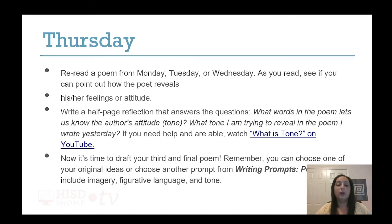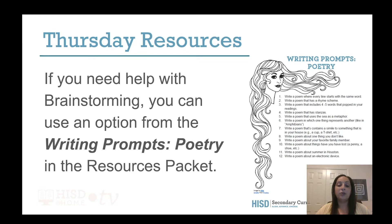On Thursday, you will re-read a poem from Monday, Tuesday, or Wednesday. As you read, see if you can point out how the poet reveals his or her feelings or attitudes. Write a half-page reflection that answers the questions: what words in the poem let us know the author's attitude or tone, and what tone am I trying to reveal in the poem I wrote yesterday? If you need help and are able, watch What is Tone on YouTube. Now it's time to draft your third and final poem. You can choose one of your original ideas or another prompt from the Writing Prompts for Poetry. Be sure to include imagery, figurative language, and tone.